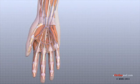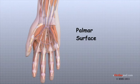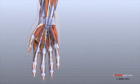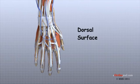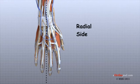Let's define some common anatomic terms as they relate to the hand. This will make it clearer as we talk about the structures of the hand later. The front or palm side of the hand is referred to as the palmar side. The back of the hand is called the dorsal side. The half of the hand from the middle finger to the thumb is called the radial side, and the other half is called the ulnar side.